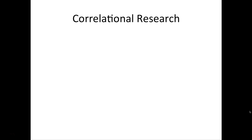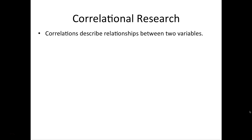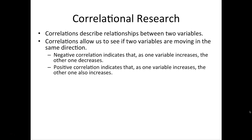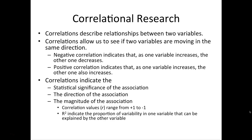Your book shifts to correlational research, which we can definitely conduct in the context of survey research — it's very commonly how we analyze survey data. Correlations essentially describe relationships or associations between two variables. They allow us to see if two variables are moving in the same direction. We call something a negative correlation when as one variable increases the other decreases, and a positive correlation when both variables move in the same direction — both increasing or both decreasing.